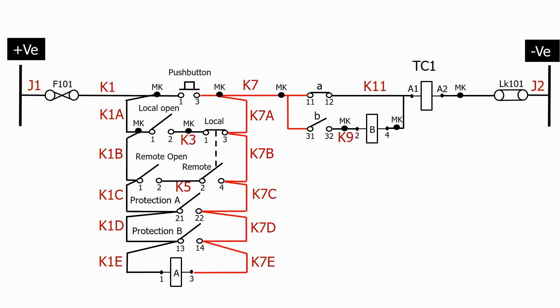So we've now done all of the positive signals. What about the negative signal? Following the same philosophy, let's use K2. We've now ferruled all of the connections on this circuit.